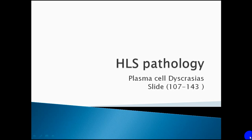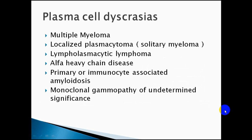Assalamu alaikum. Continuing the discussions about WBC disorders, in this video we're going to talk about plasma cell dyscrasia, or plasma cell disorders — where dyscrasia is another word for disorder. As we know, plasma cells are the activated B cells which produce antibodies or immunoglobulins. The dyscrasias that arise from the plasma cell are mainly caused by what the plasma cell is producing.